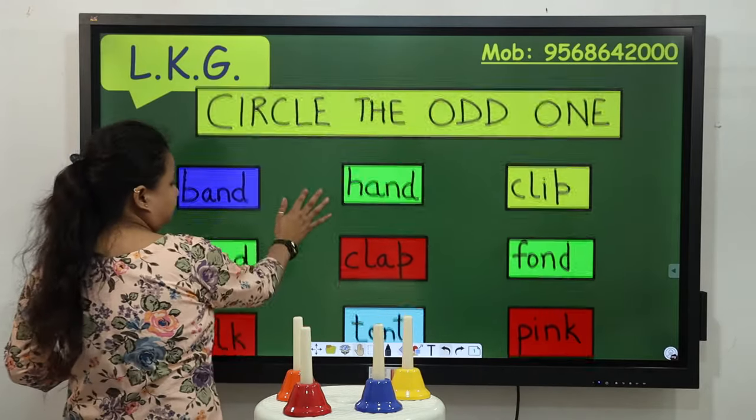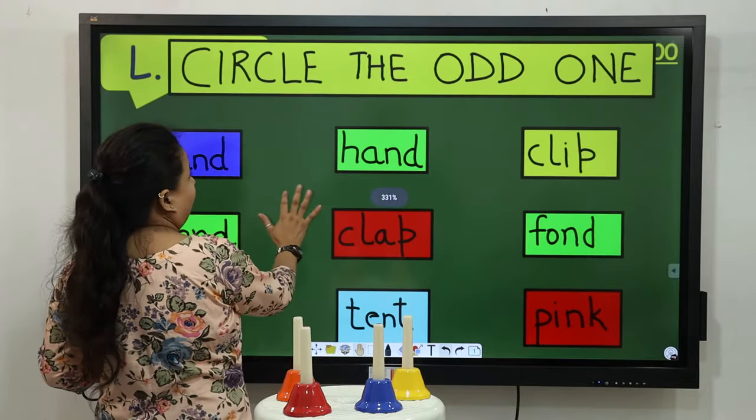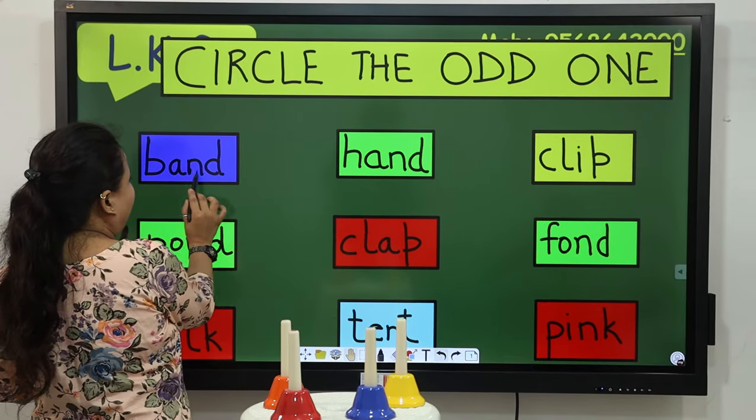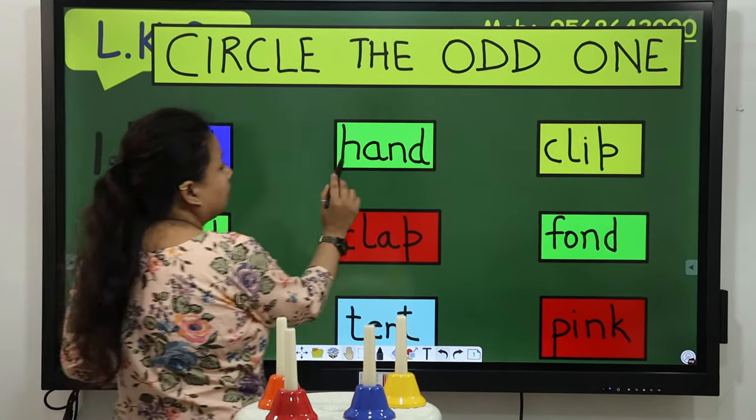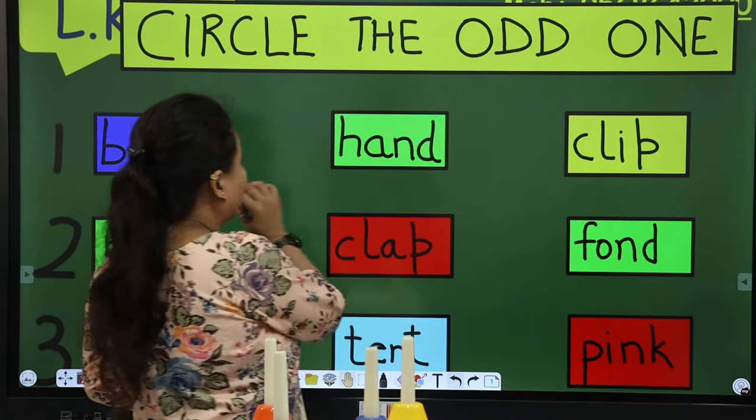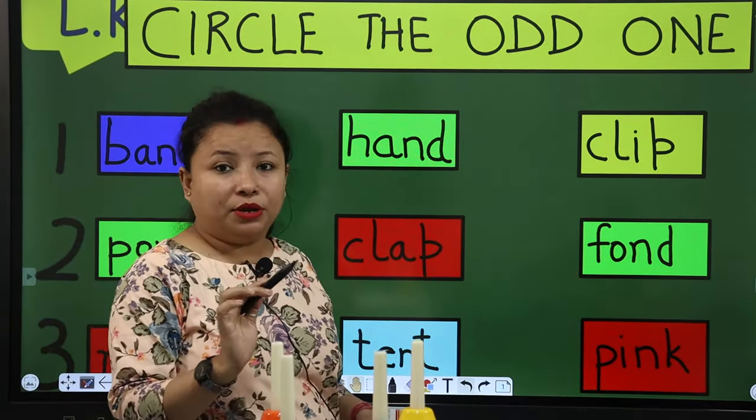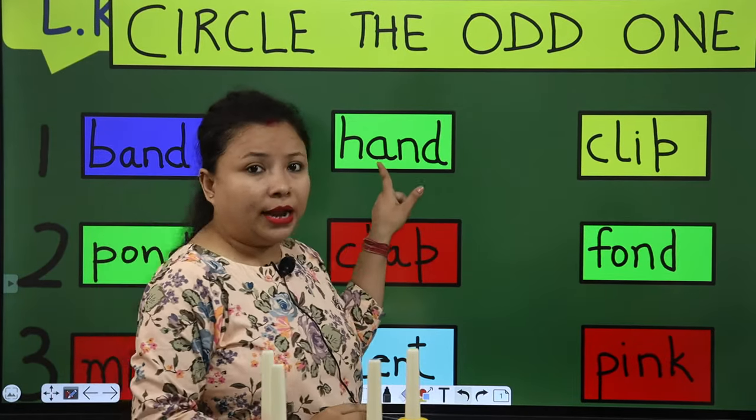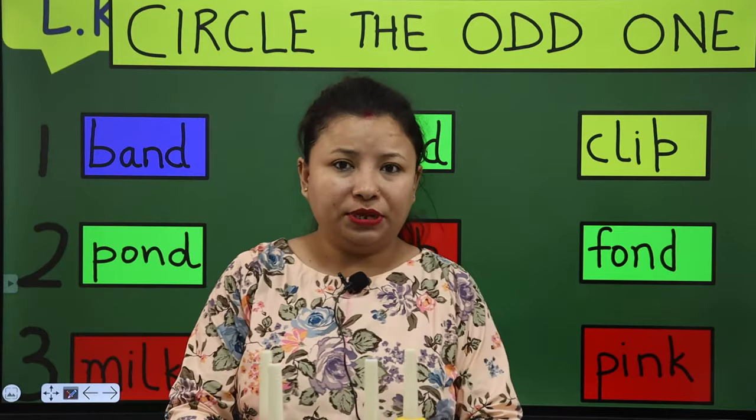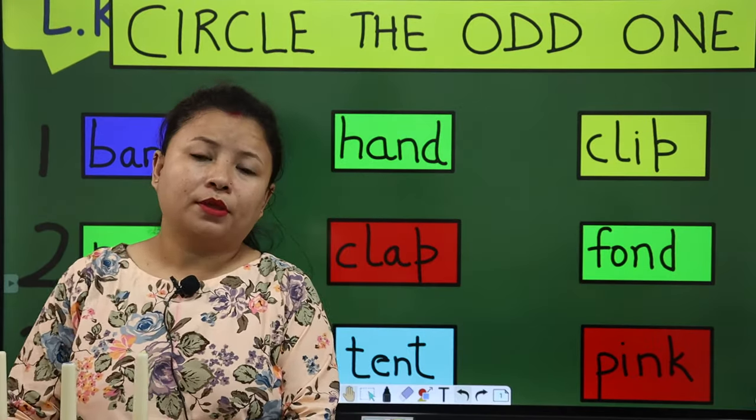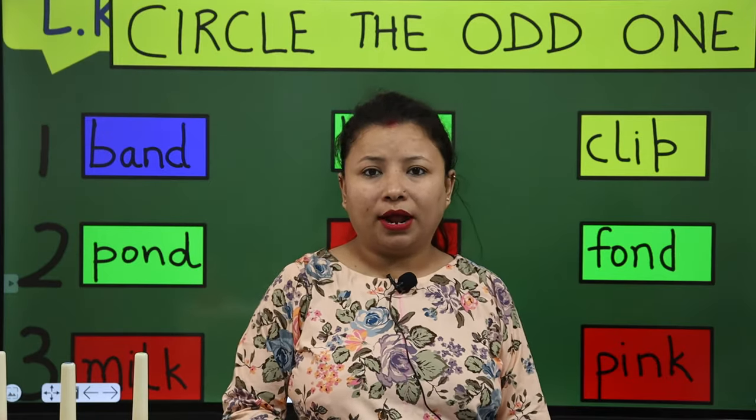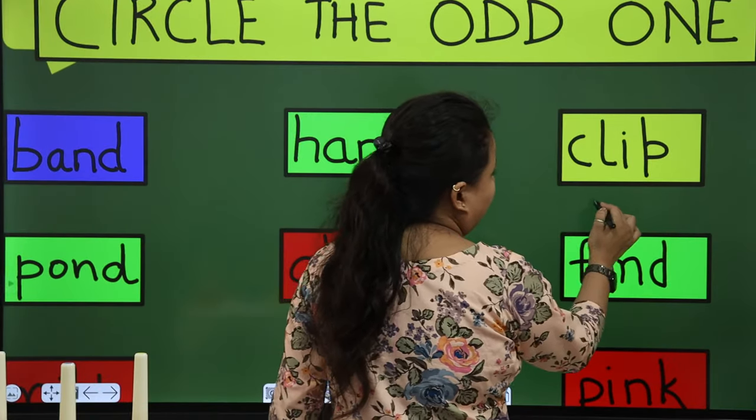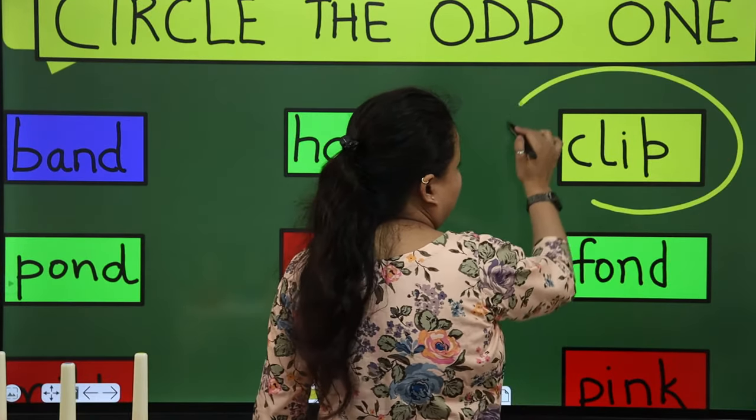Look here. This is band, B-A-N-D band. H-A-N-D hand. Both have same rhyming word. And this is clip. So clip is same like hand or band? No. Clip is different. So this is the odd one. So what you have to do? You have to make a circle on it. Like this.